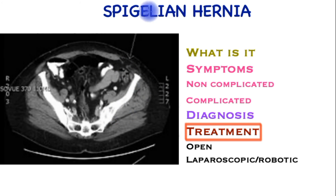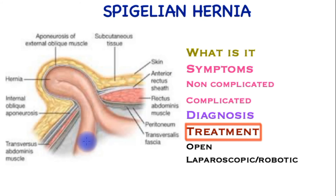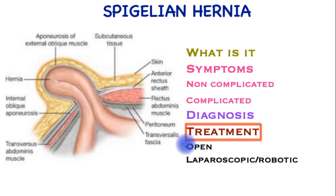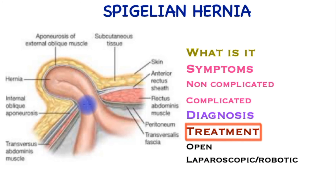Once diagnosed with this condition, it is best to consider an operation because of the risk of strangulation, as can be seen in this cartoon of a loop of bowel going through the hernia. The surgery can be performed through the open route by making an incision at the front and dissecting down to the hernia. It is important that the surgeon recognizes that the hernia is hiding beneath the superficial layer of muscle — the external oblique — then pushes the hernia back and reinforces the front with a mesh once the hernia has been brought together with sutures.